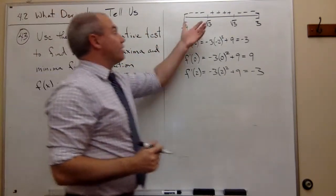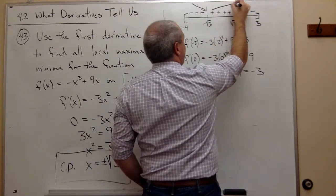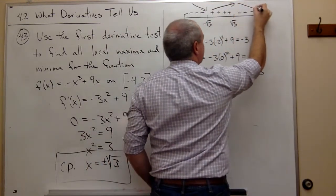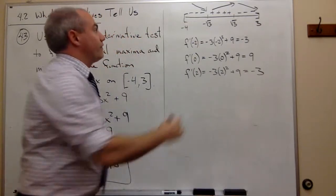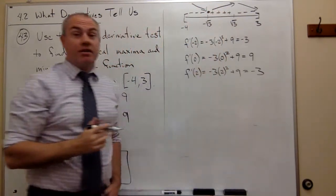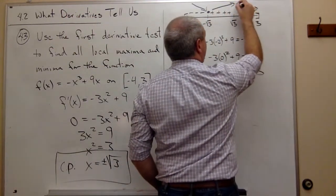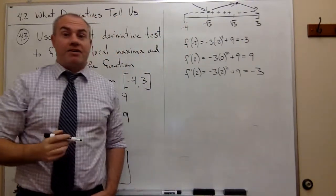Now I can look at this. Negatives mean going down. Positives mean going up. Negatives mean going down. So if it's going down and then it's going up, this point must be a local minimum. And if it's going up and then it's going down, then this point must be a local maximum.